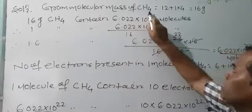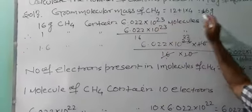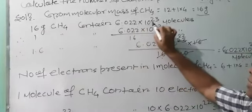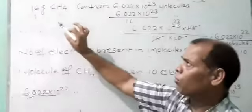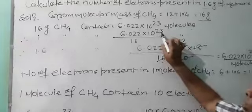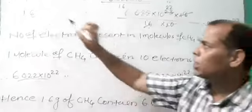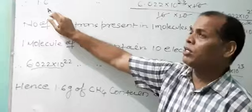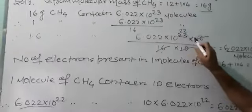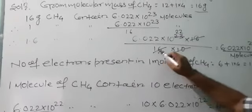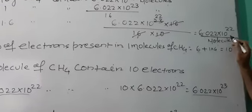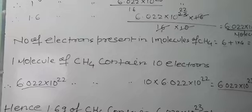Let me explain again. Gram molecular mass of methane equals 16 grams. 16 grams of methane contains 6.022 × 10²³ molecules. Therefore, 1 gram of CH₄ contains 6.022 × 10²³ ÷ 16 molecules. Therefore, 1.6 grams of methane contains 6.022 × 10²³ × 1.6 ÷ 16, which equals 6.022 × 10²² molecules of methane.